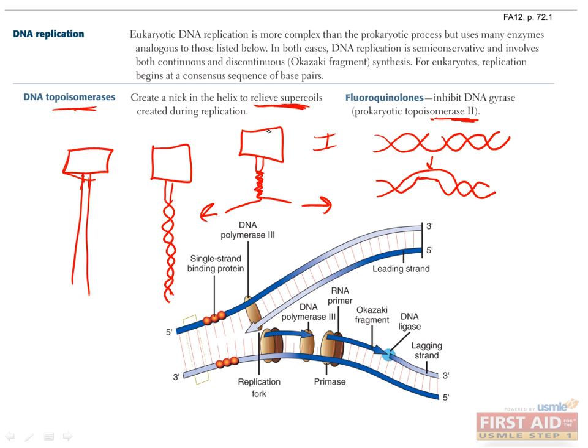Since regulating supercoils is such an important process in cells, if you inhibit them in bacteria by using fluoroquinolones, the bacteria are unable to divide.